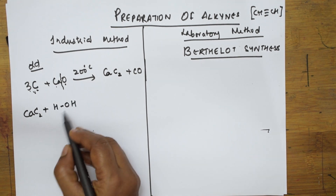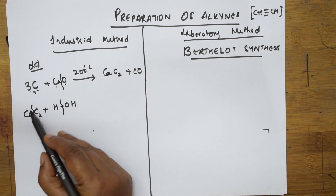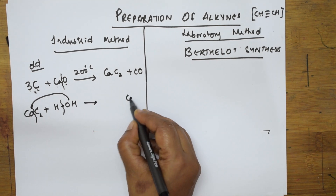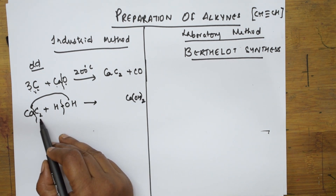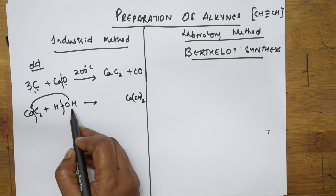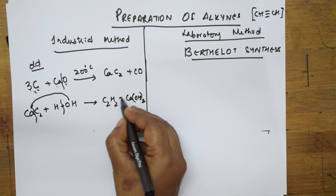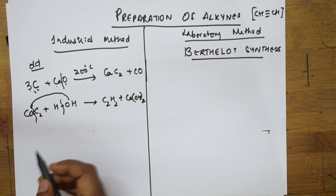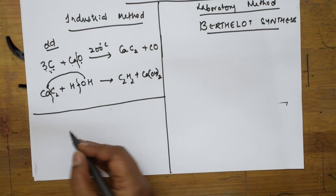This calcium carbide is further hydrolyzed by addition of water. The calcium comes out as calcium hydroxide. What is left is C2H2 — that is acetylene. So this is how acetylene is prepared by the old industrial method. Simple, isn't it?